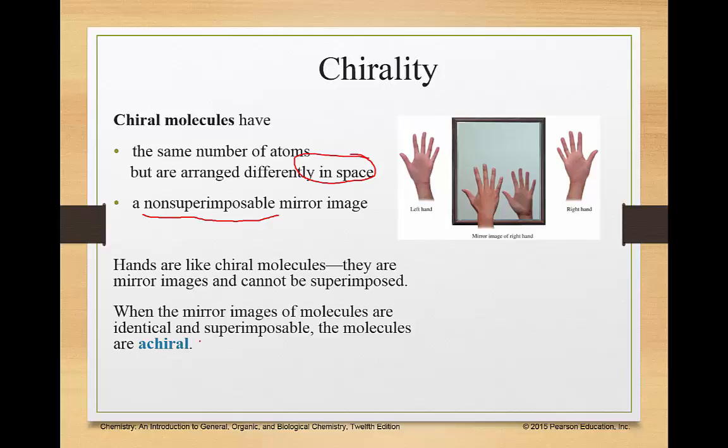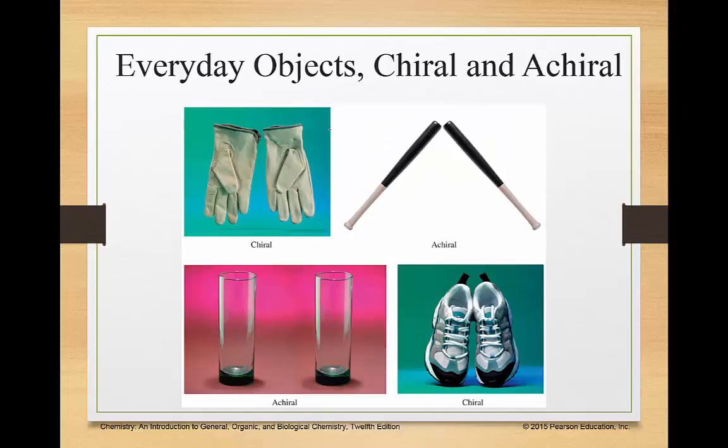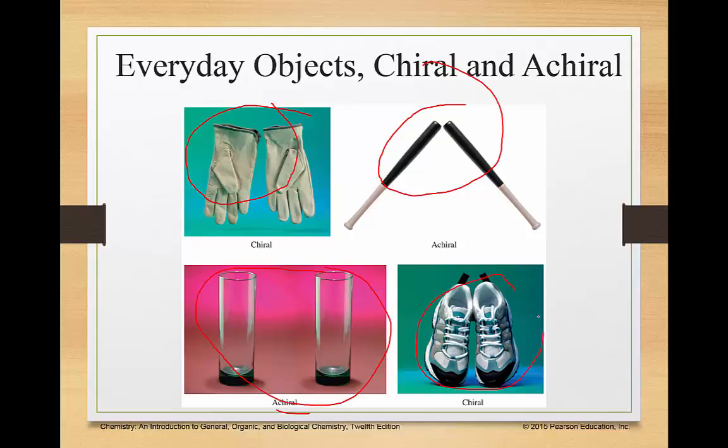You can't put your left foot into your right shoe. It's just not going to work. If you can do that, that's called achiral. So if we look here, the gloves are chiral. It's for specific hands. A baseball bat, however, is not. It's achiral. Glasses are not chiral, so it's achiral. Shoes, however, are chiral because they're specific for a shape.